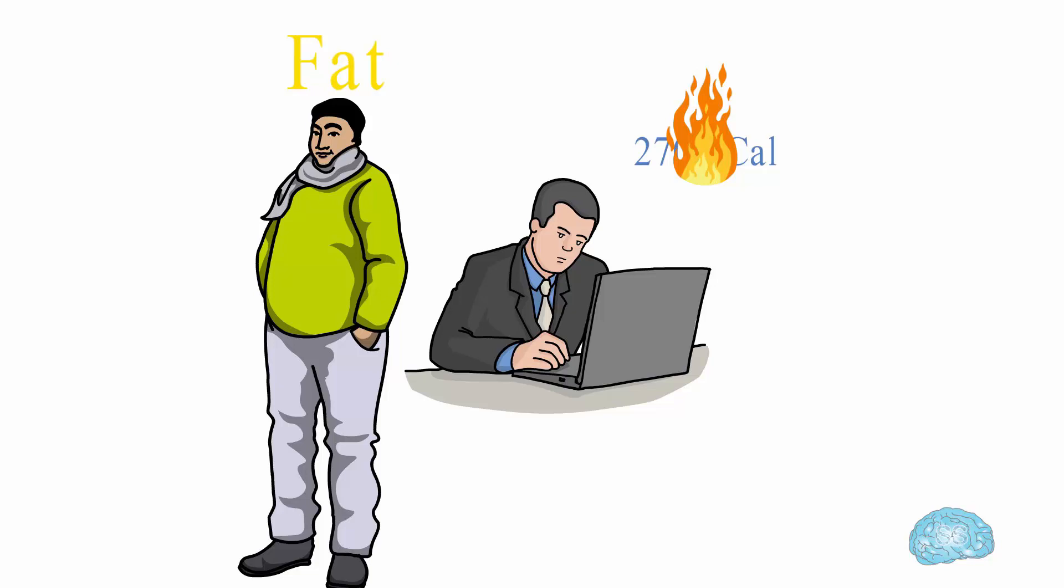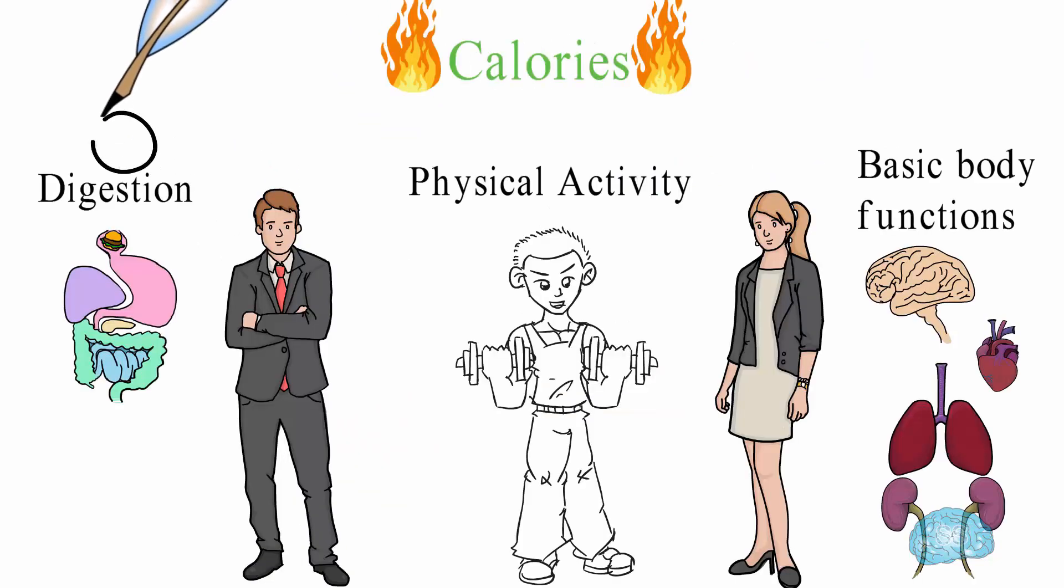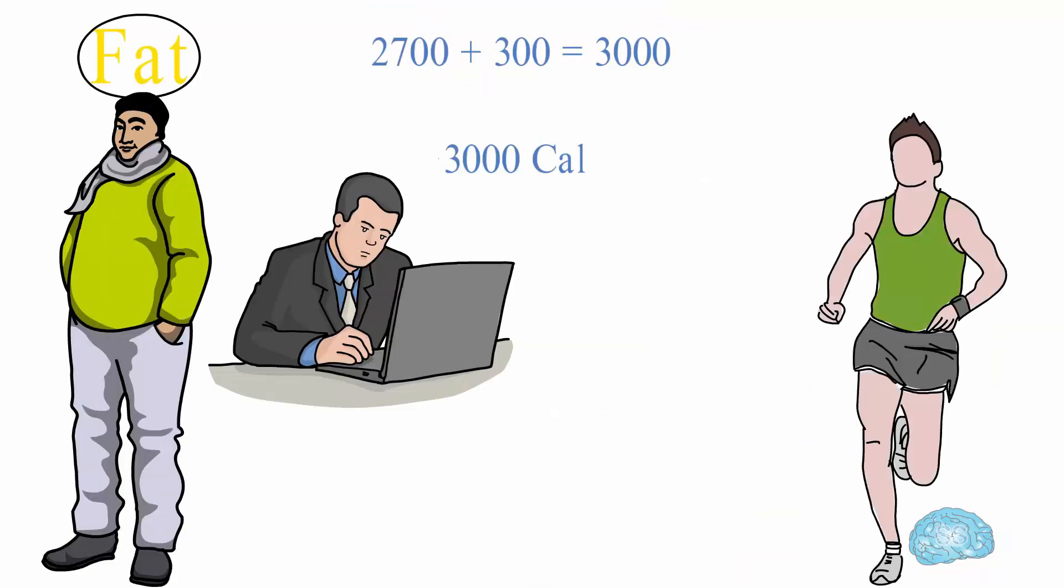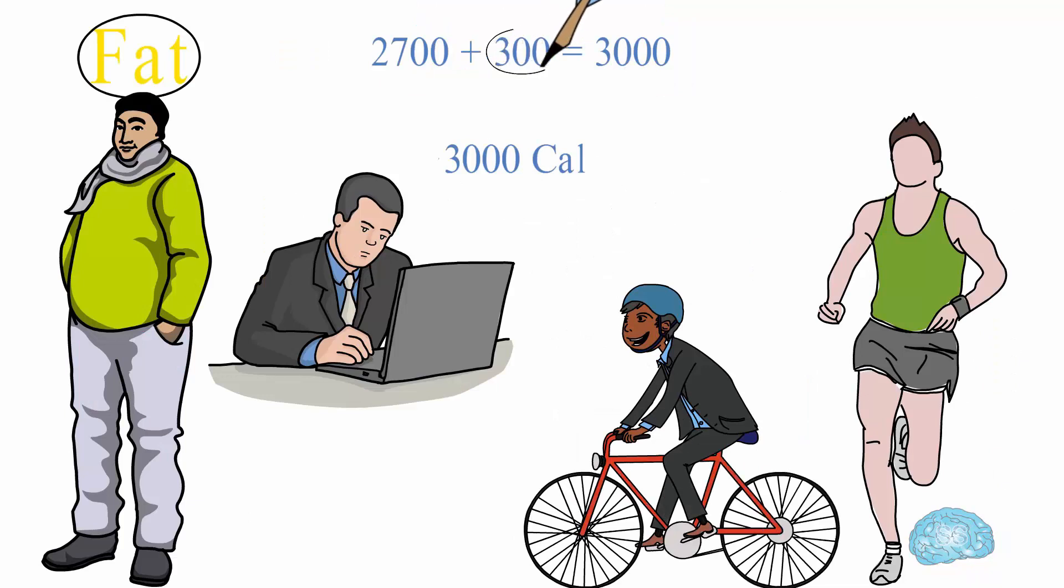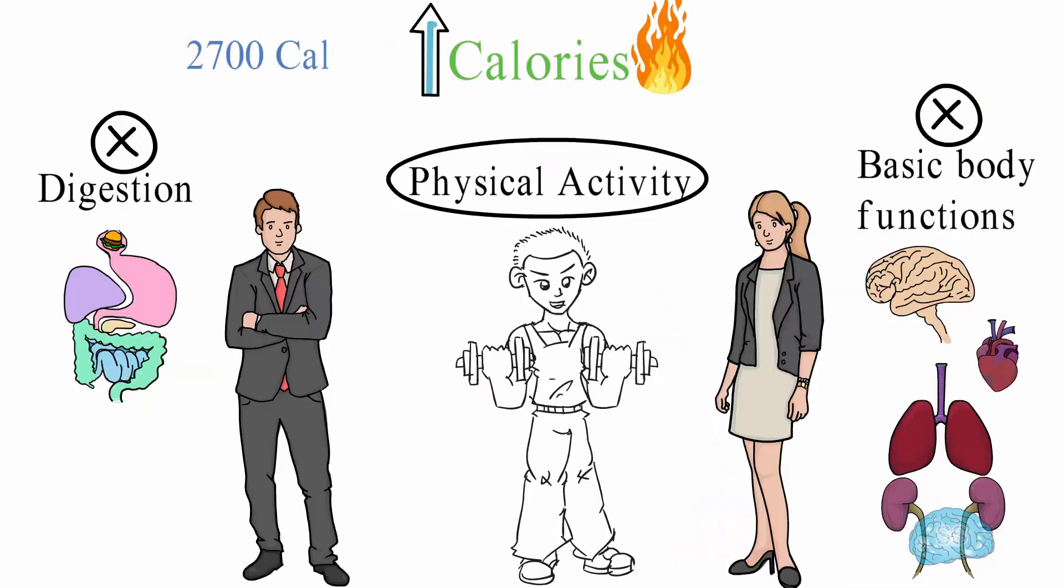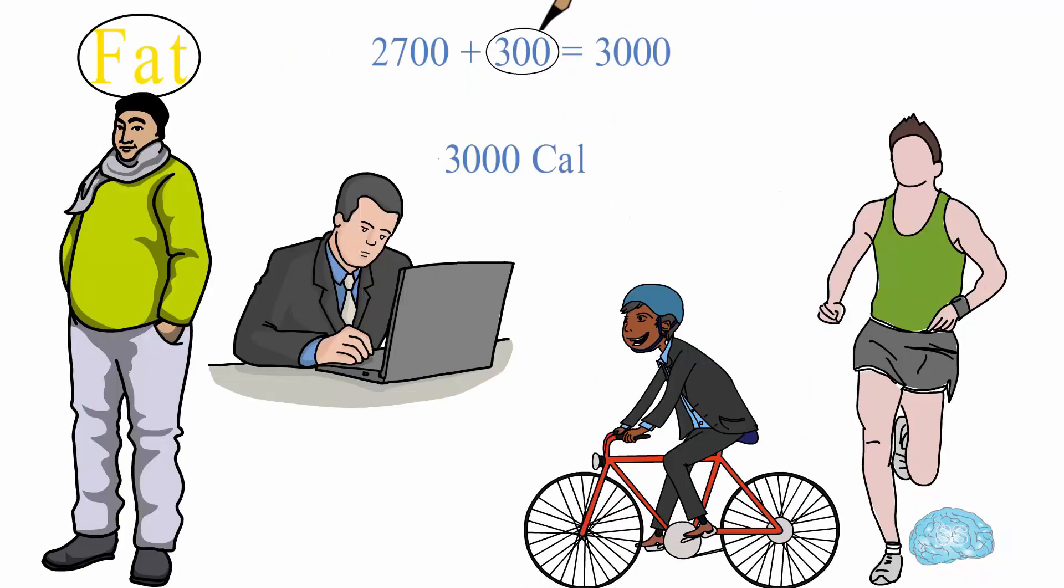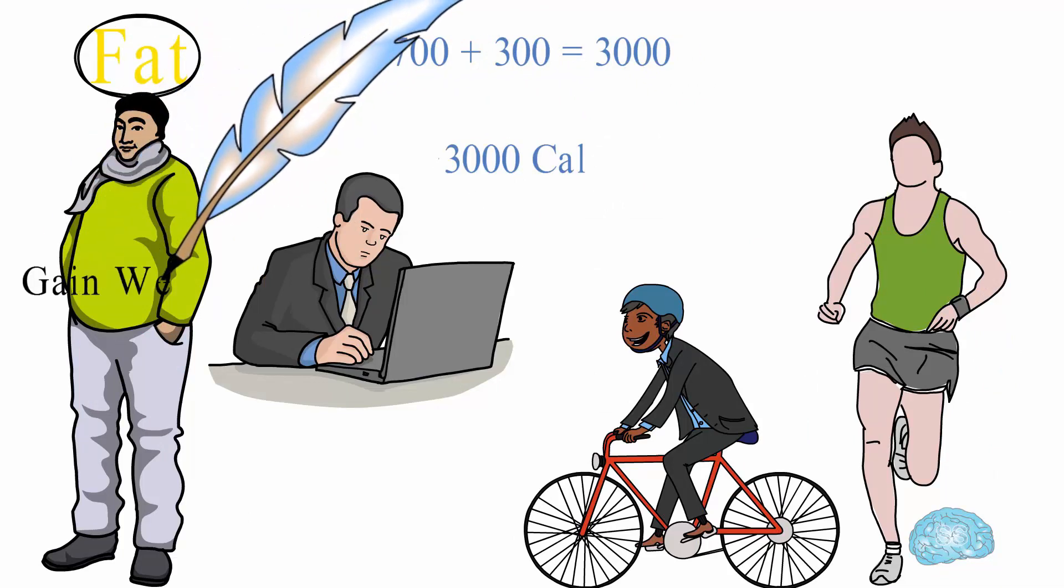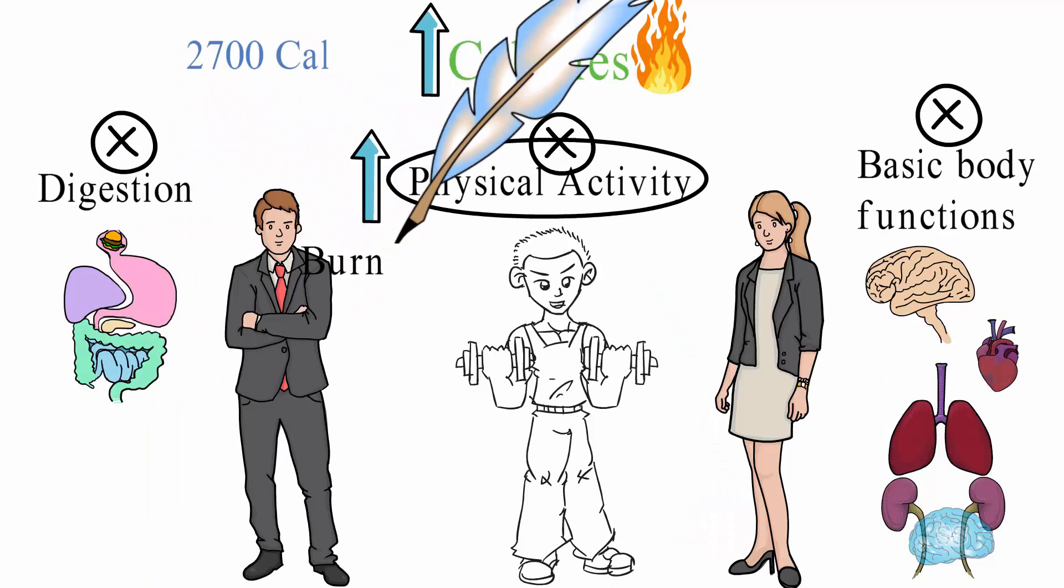But if he eats more than that, let's say 3000 calories, then he has to do something to burn the additional 300 calories. Otherwise, it will be stored as fat. Now, he cannot use that for digestion or support body functions because they have already been taken care of by 2700 calories. So, the only thing remaining is physical activity. Yes, you got it. He has to do additional physical activity to burn the remaining 300 calories. It means the more additional calories he eats, he has to burn it by more physical activity. If no additional physical activity is performed, the additional calories are stored in fat cells. That is how a person gains weight and that is why burning fat involves more physical activities.